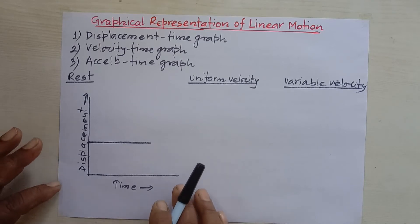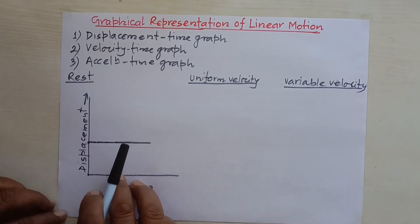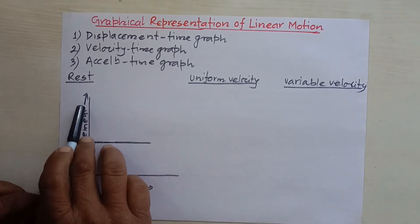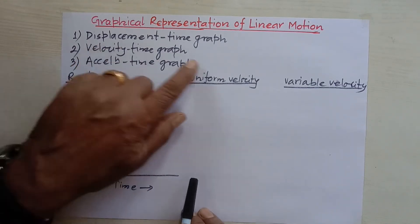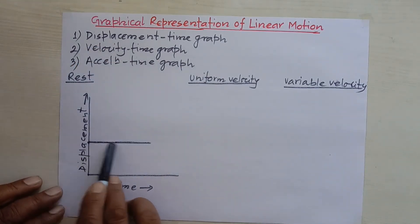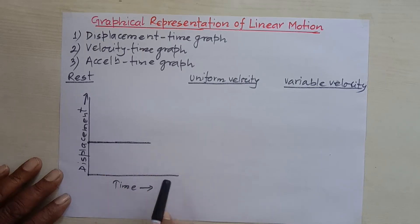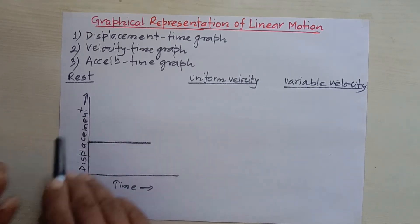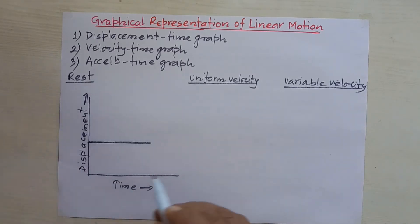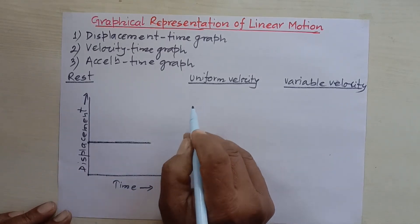So the graphical representation of a body at rest on a displacement-time graph is a straight line which is parallel to the x-axis, or we can say parallel to the time axis.